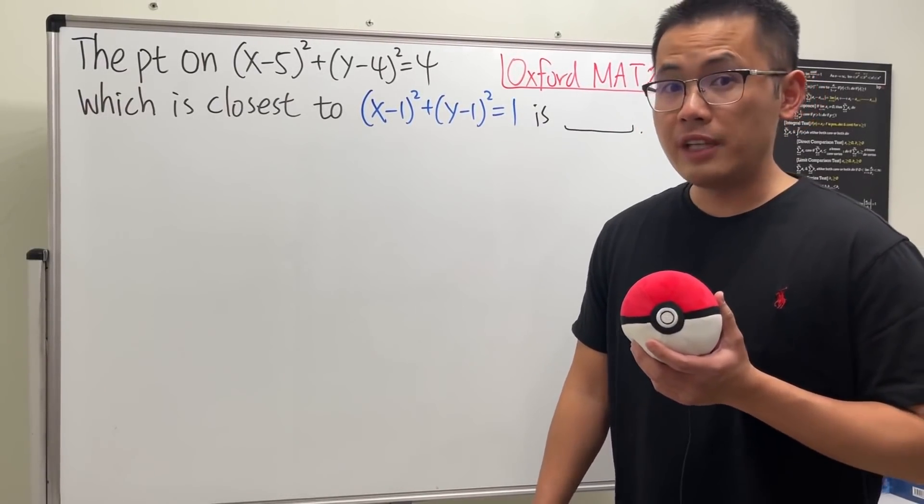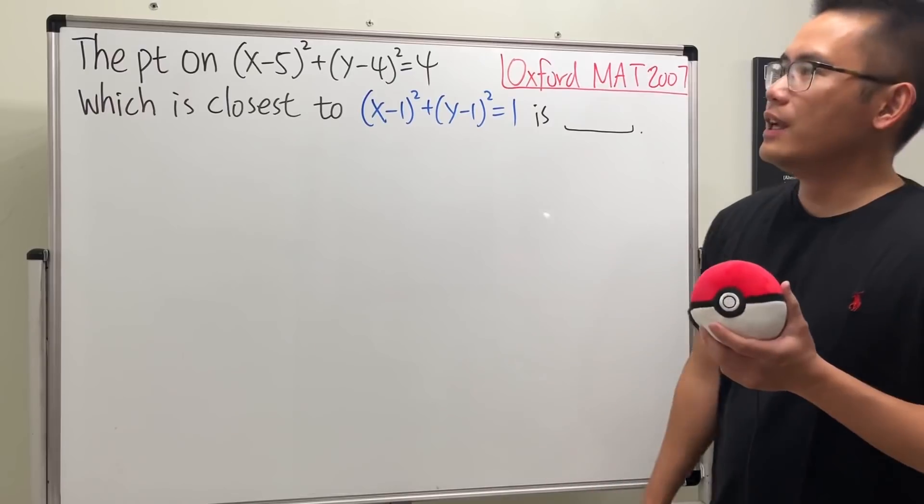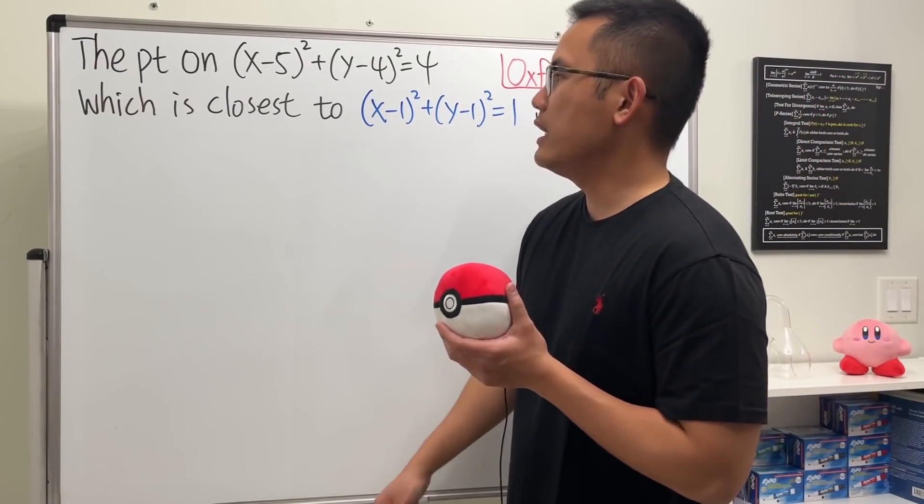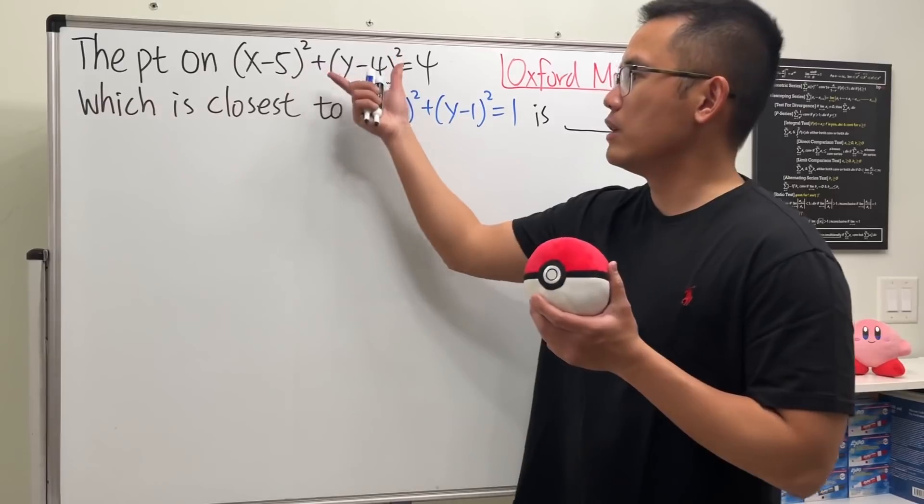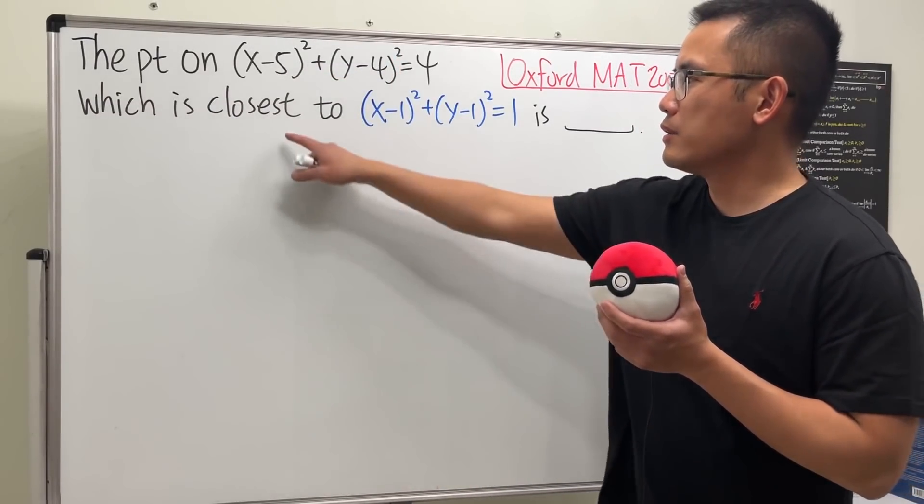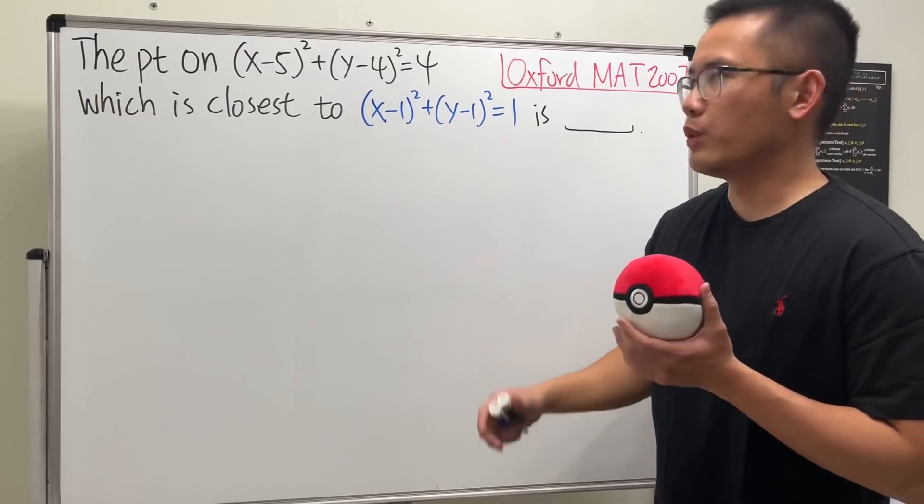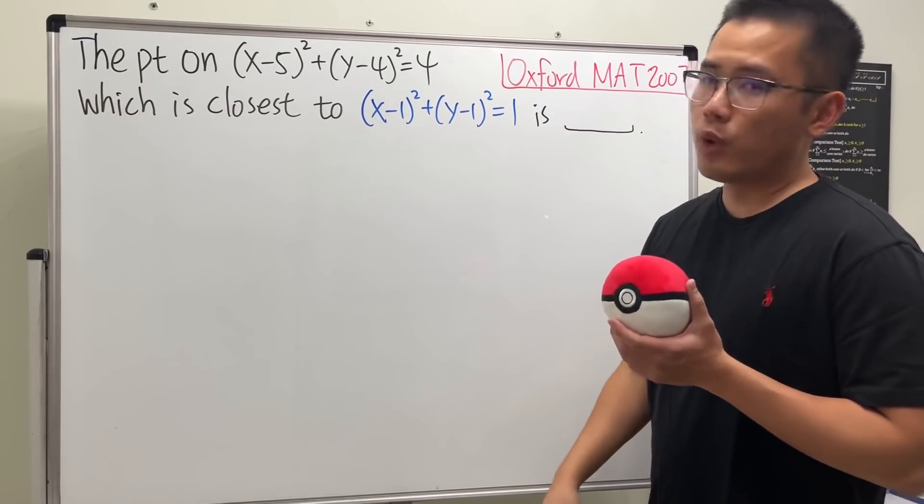This is from the Oxford Math Admission Test back in 2007. We are given two circles and we're going to find the point on this circle which is going to be closest to this circle, and we want to find out what point that is.